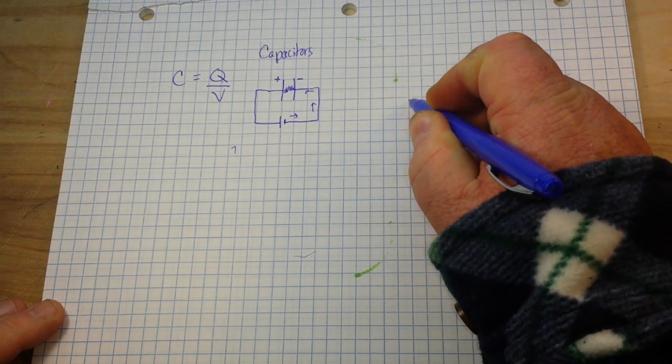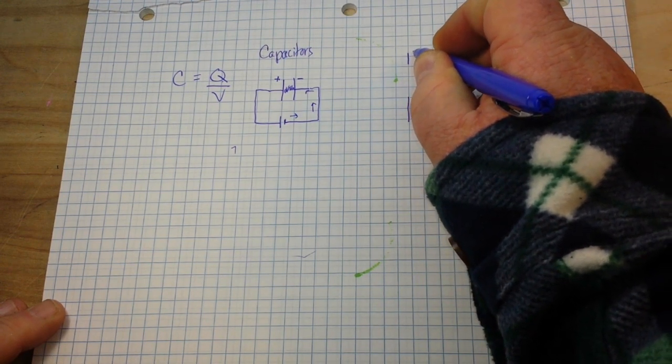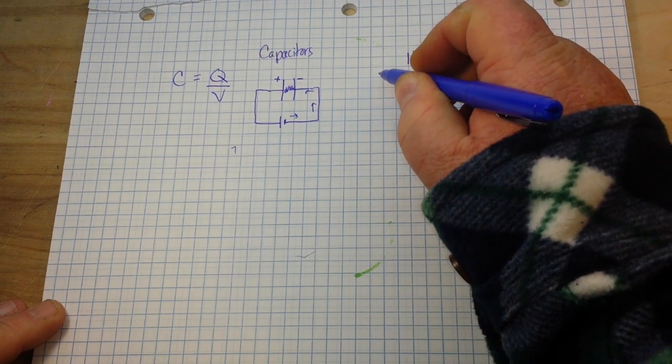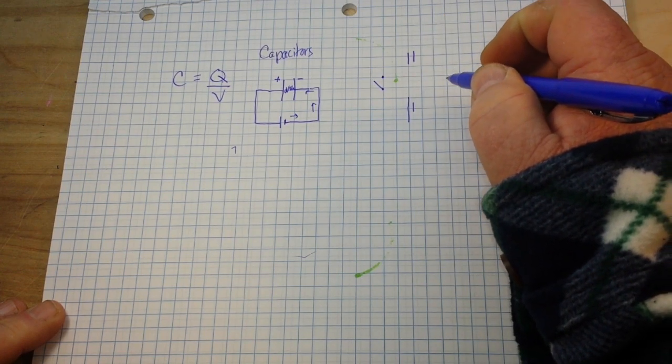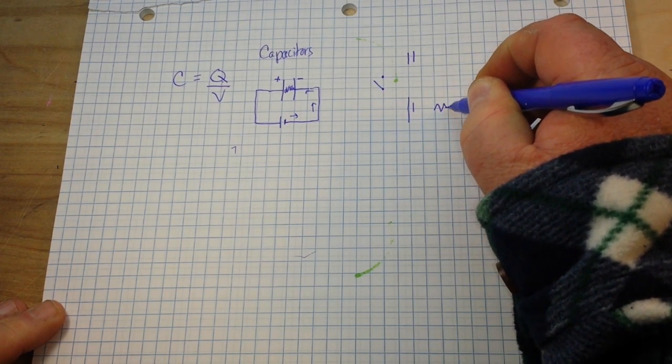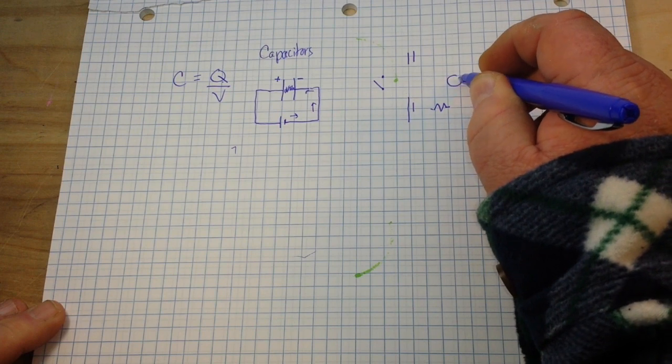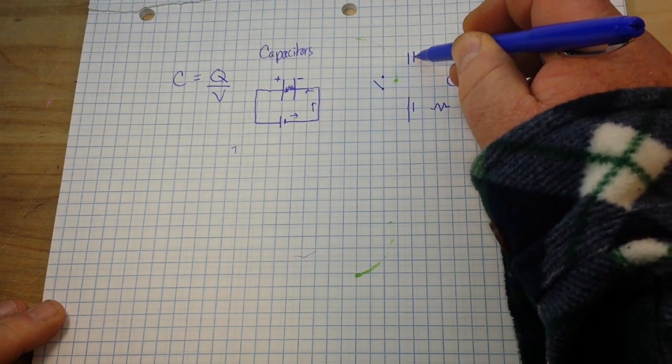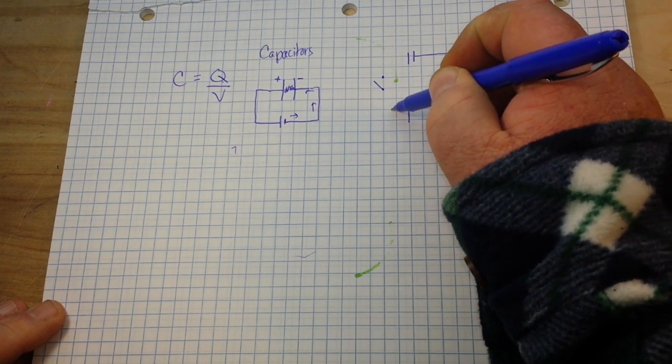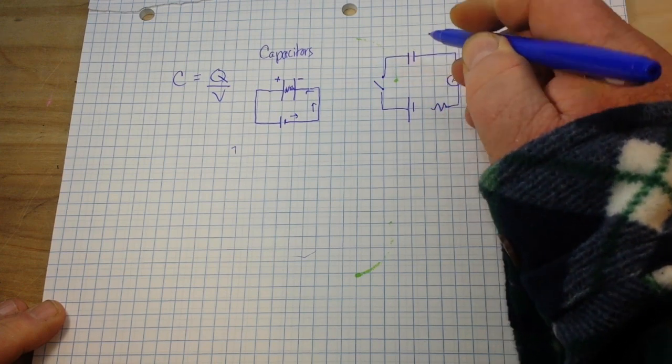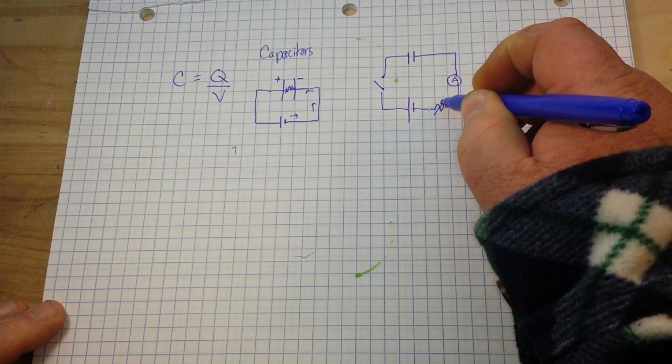But let's look at a more realistic example here. Let's have our battery, then we'll have a capacitor, a resistor, and we'll have a switch, a resistor, and we'll put in an amp meter here.